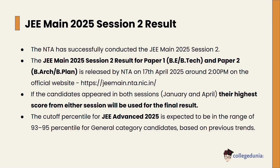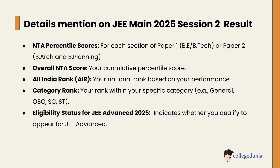If candidates appeared in both sessions — January and April — then their highest score from either session will be used for the final result. The cutoff percentile for JEE Main 2025 is expected to be in the range of 93 to 95 percentile for general category candidates, based on previous year trends.